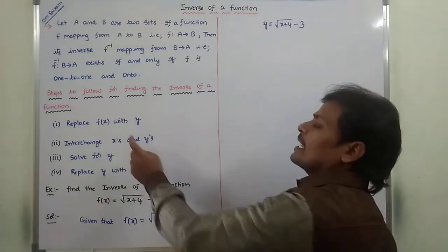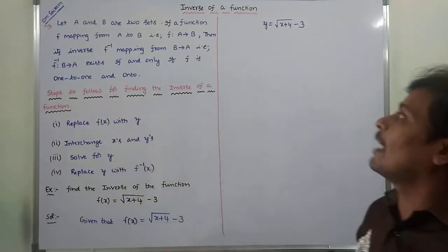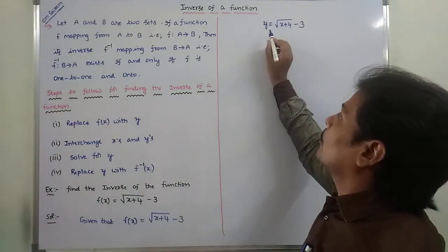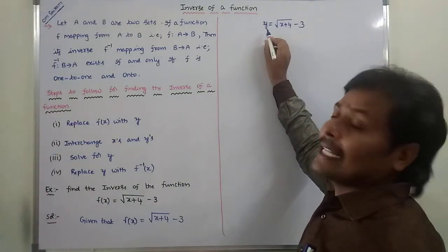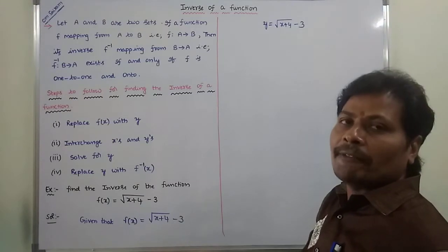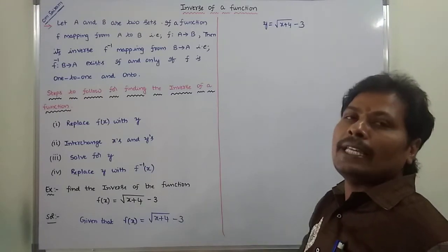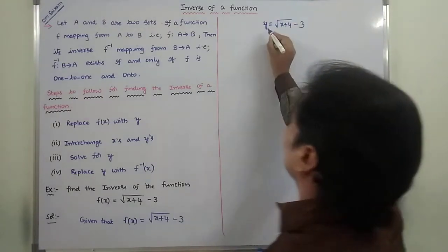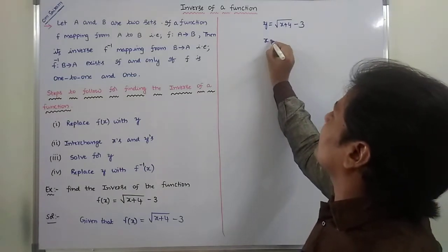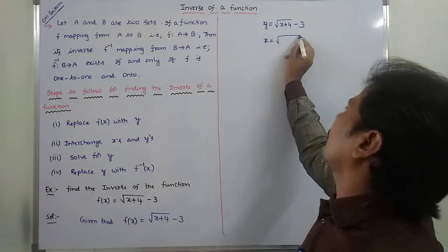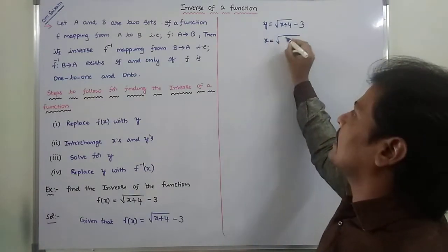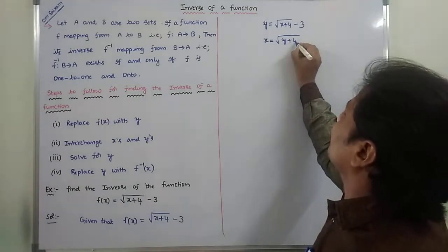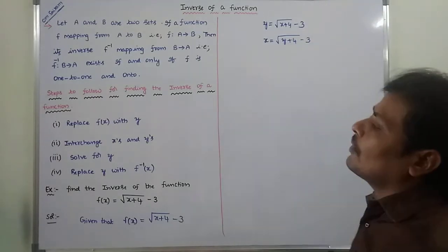Second step: interchange X and Y. Wherever X appears, replace it with Y, and wherever Y appears, replace it with X. So Y becomes X, and X becomes Y, giving us X is equal to the square root of (Y plus 4) minus 3.